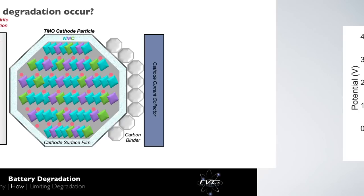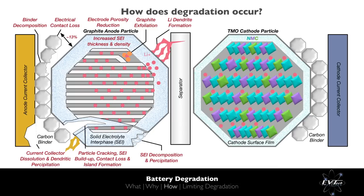Following copper dissolution into the electrolyte, a subsequent charge will result in the precipitation of copper onto the anode surface as metallic dendrites, which pose similar safety concerns as lithium dendrites. The reduced current collector thickness and/or surface contact area will result in increased electrical resistance. The dissolved copper will also likely form additional compounds within the solid electrolyte interface, causing it to become unstable. Additionally, at high temperatures, the carbon-based binder will react with the electrolyte and decompose, resulting in further loss of electrical contact and rise in electrical resistance.